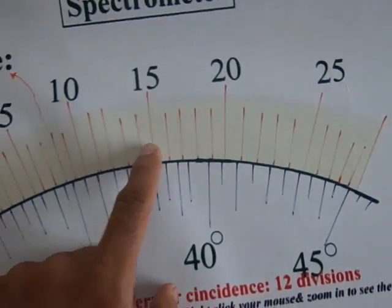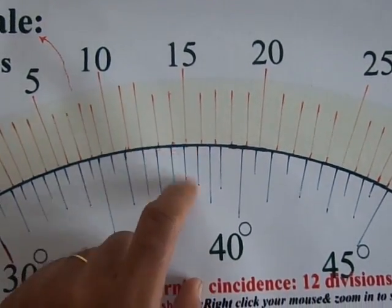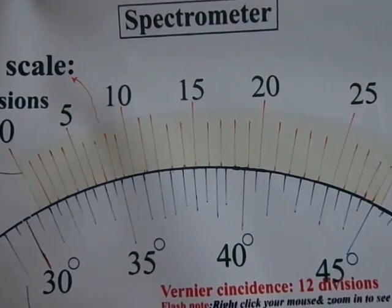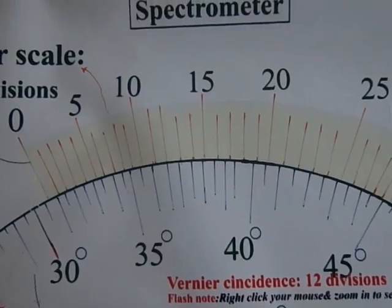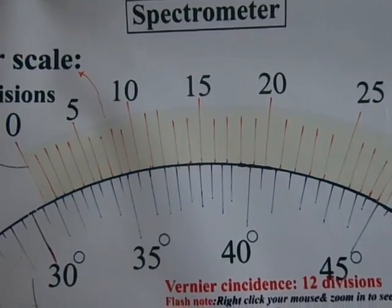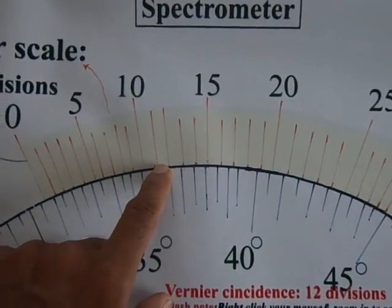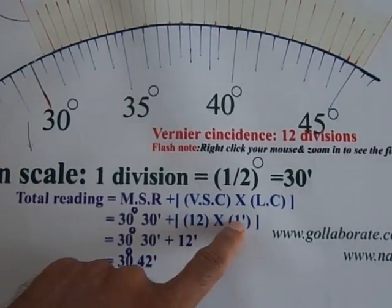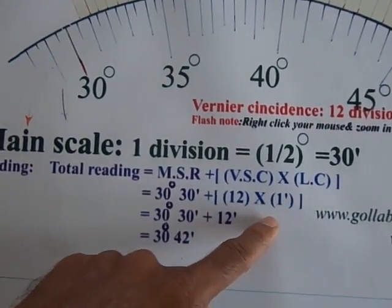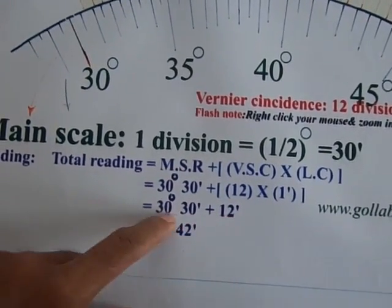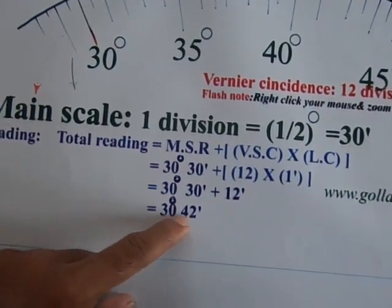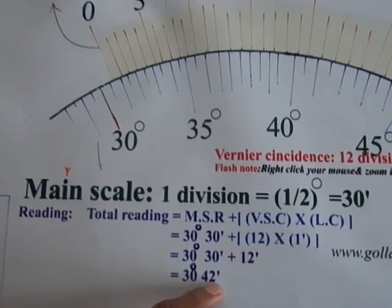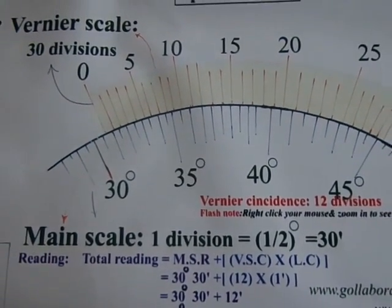Then, out of the 30 vernier scale divisions, one of the vernier scale divisions makes the exact coincidence with the line of the main scale division. I'll go and find that. It is the 12th division that makes the coincidence. So that 12th position is multiplied with the least count and added to the main scale reading. 12 minutes is to be added, so it comes to 30 degrees and 42 minutes. So there was a sample reading to understand the reading taking in the case of the spectrometer.